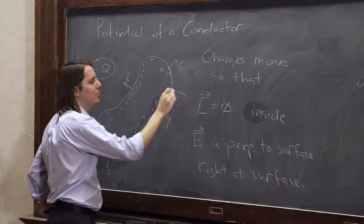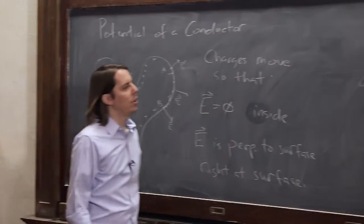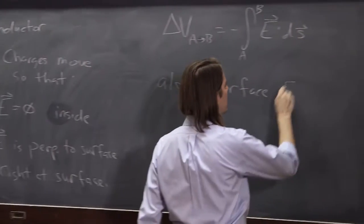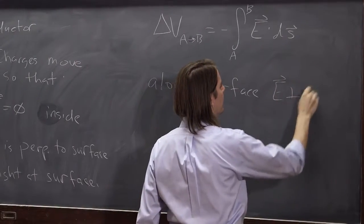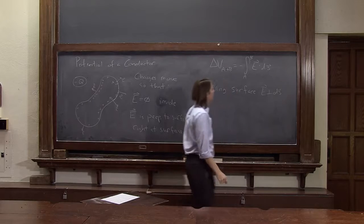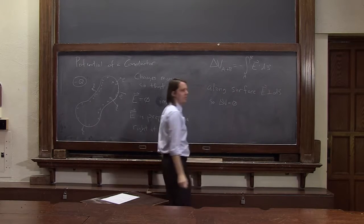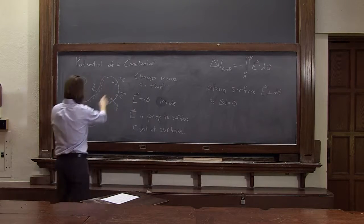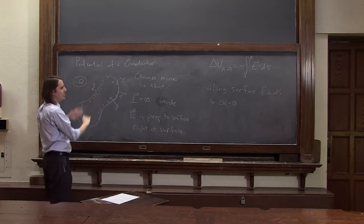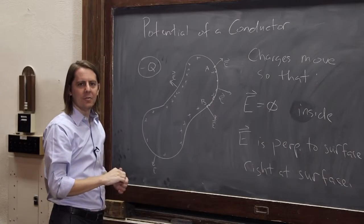and the e's are always going to be perpendicular. So if we go along the surface, E is perpendicular to ds. So delta V is going to be zero. Any two points you pick on the surface and move around in all three dimensions, you're never going to get a difference in potential.